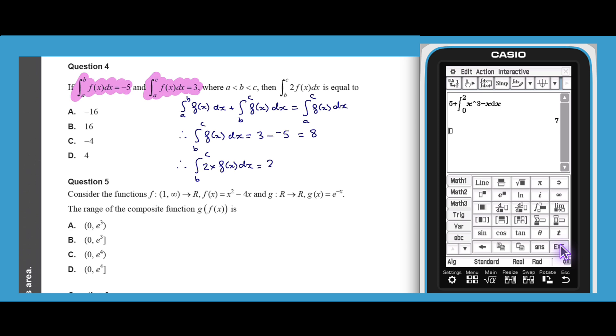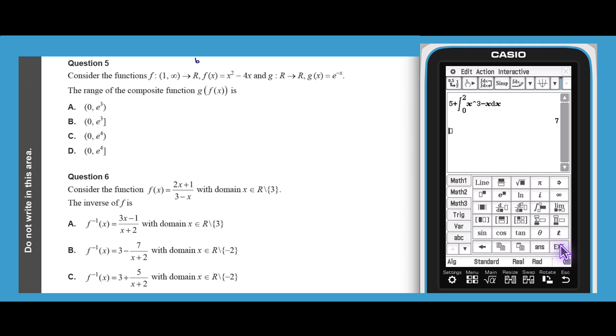Question 5 asks about the range of a composite function g of f of x. This can be found by thinking about the ranges of the two functions f and g. The graph of f looks like this.